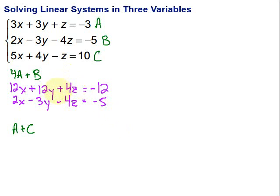Notice I have opposites in my z term, so this is looking good, exactly what I want. And I'm going to now add vertically. So 12x plus 2x is 14x. Then here we have 12y minus 3y is plus 9y. The z's are gone, and that's equal to negative 17.